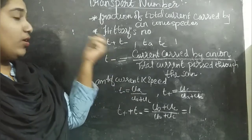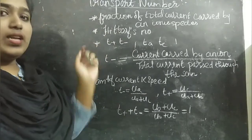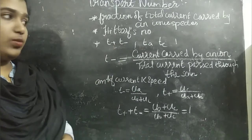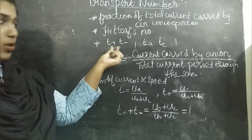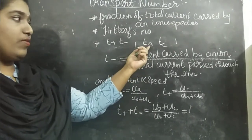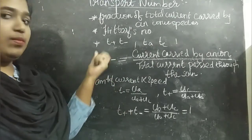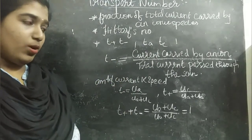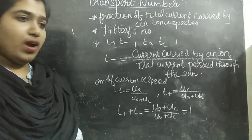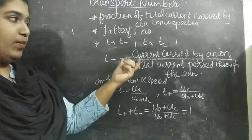The transport number can also be called Hittorff's number, because we determine this by Hittorff's method. We represent it by T+ and T−, which means the transport number of the cation and the anion. For example, T− (transport number of the anion) equals the current carried by the anion divided by the total current passed through the solution — this is the fraction of the current carried by the anion.